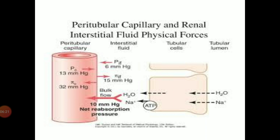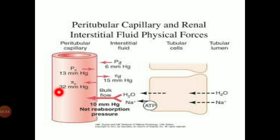In the peritubular capillary, which gives blood supply to the tubular epithelium, there is higher osmotic pressure in comparison to the hydrostatic pressure. This is because the peritubular capillary is a branch of the efferent arteriole, and in the efferent arteriole the blood contains plasma protein and blood cells maximally. Due to the plasma protein present in the peritubular capillary, the osmotic pressure exerted would be higher. Plasma protein cannot be filtrated from the glomerular membrane under normal conditions, so it eventually comes into the peritubular capillary, giving it comparatively higher osmotic pressure than hydrostatic pressure.